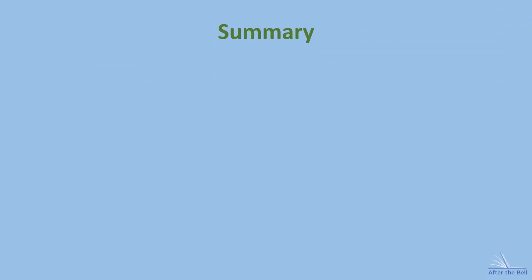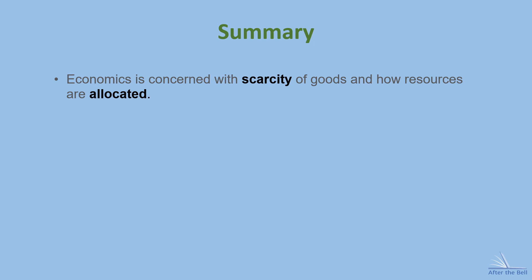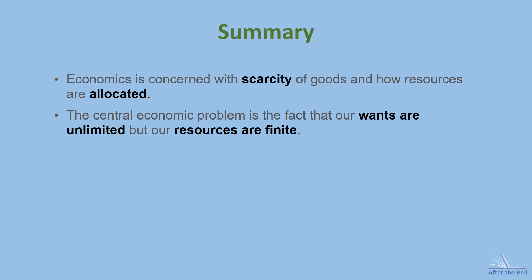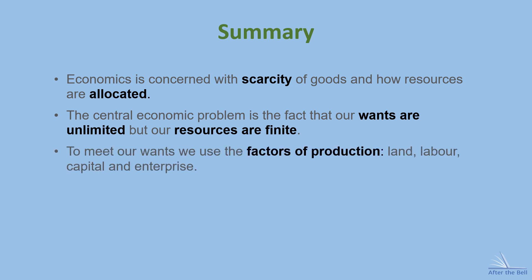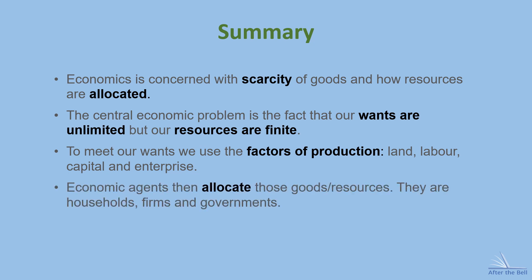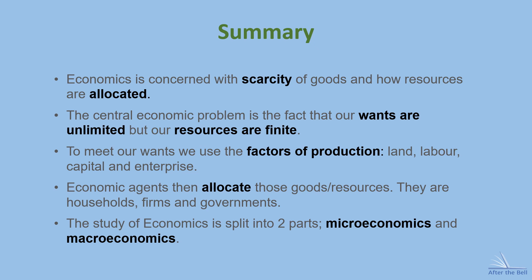To summarize: economics is concerned with scarcity and how resources are allocated. The central economic problem is the fact that our wants are unlimited but our resources are finite. To meet our wants, we produce goods and services using the four factors of production — land, labor, capital, and enterprise. Economic agents called households, firms, and governments then make decisions on the best allocation of these goods and services. From here, the study of economics is split into two strands: microeconomics and macroeconomics.